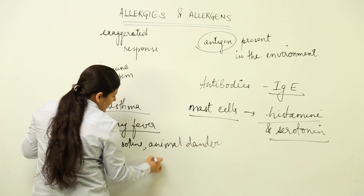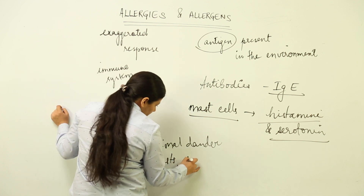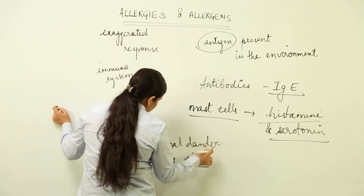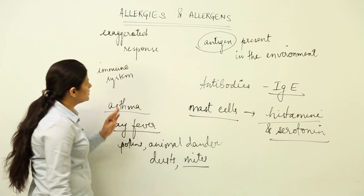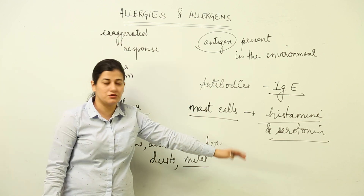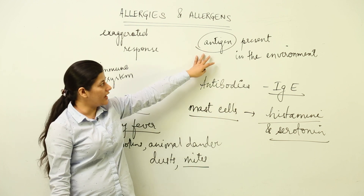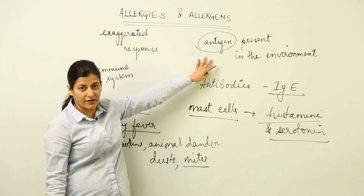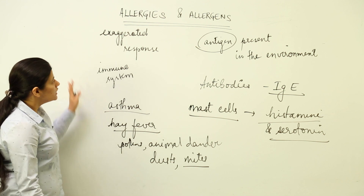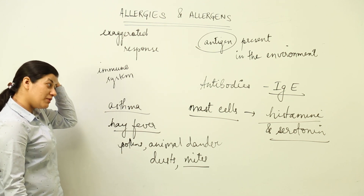We also have dust mites as allergens. There are certain allergens in the environment which can bring about this allergic response — which is the exaggerated release of histamine and serotonin by mast cells. To counter the antigens which have entered the body, we have the release of IgE. This is what allergy is.